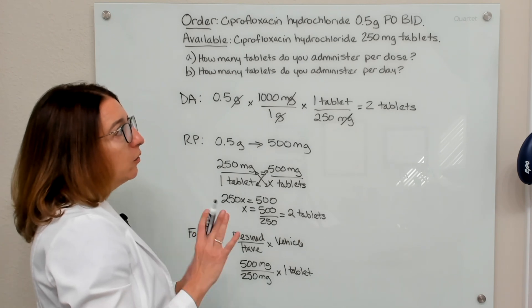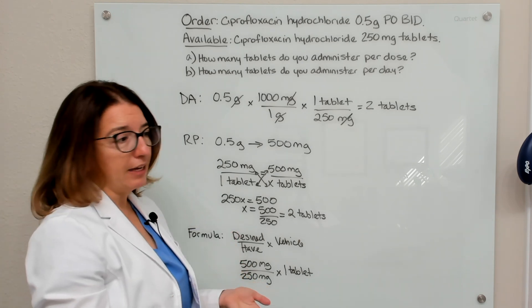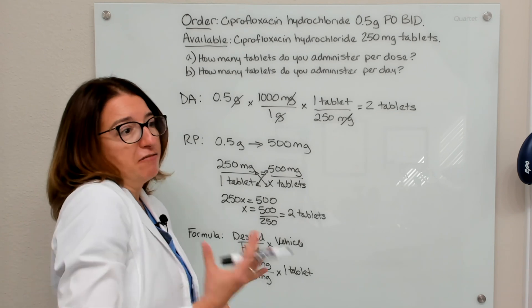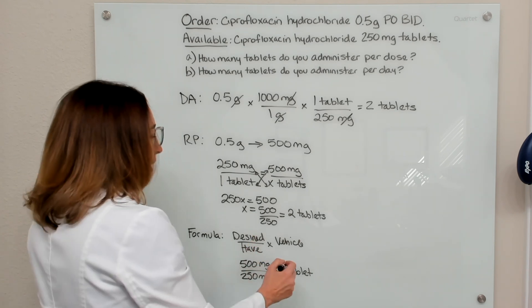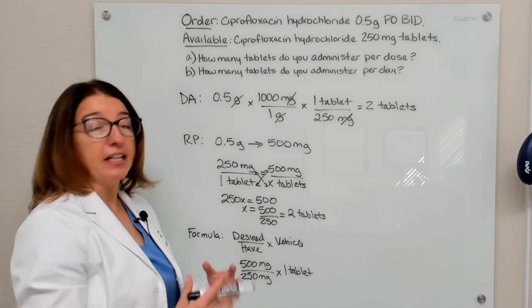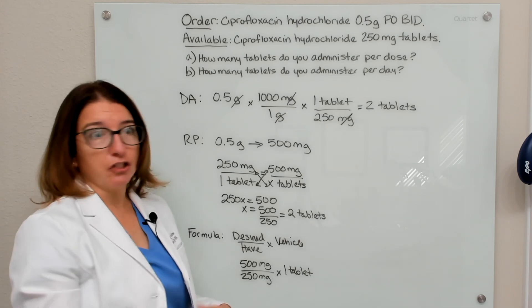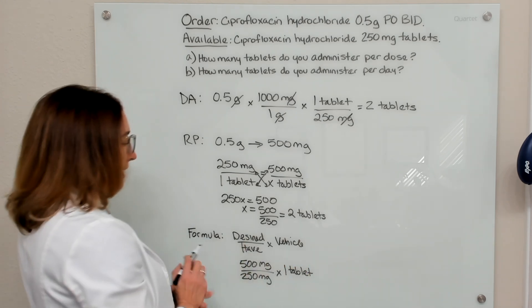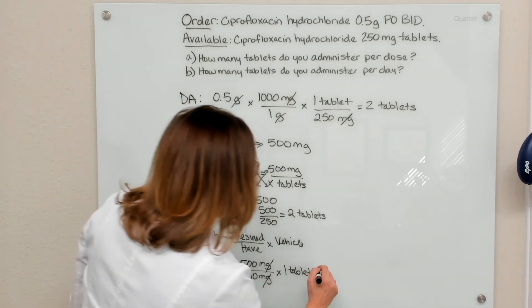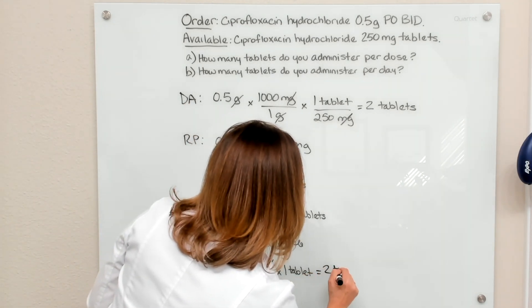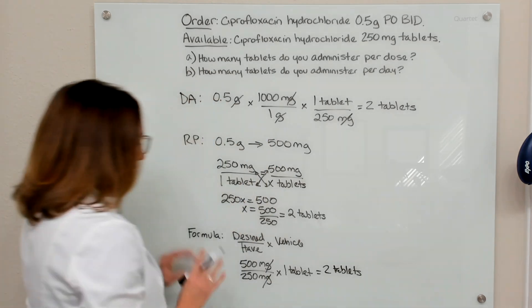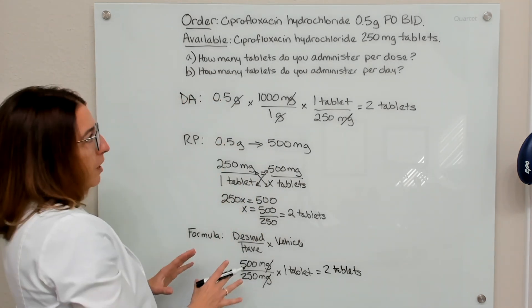By vehicle, I mean how are we getting this dose into the patient. We have 250-milligram tablets, so the tablet is the vehicle. When going over liquid oral medications, the vehicle might be like five milliliters or 10 milliliters — you're getting that dose in a solution, so your vehicle will be different. But in this case it's one tablet. So if we do this math, we end up with two tablets. That's a third way to solve this problem.